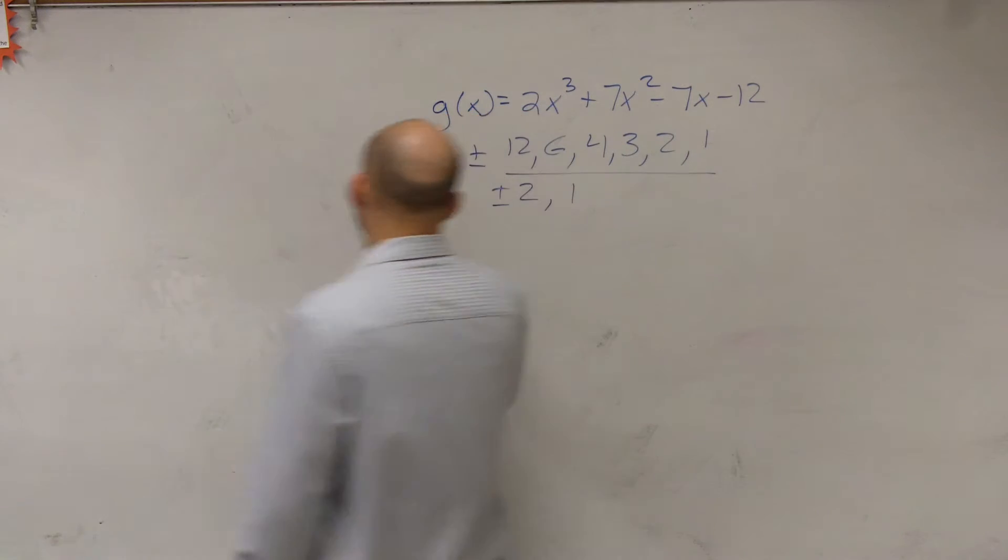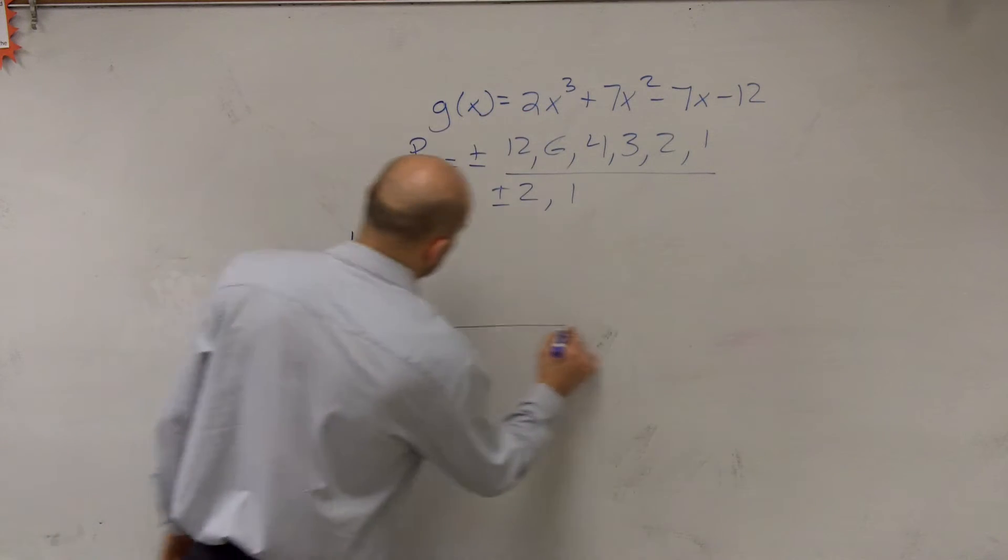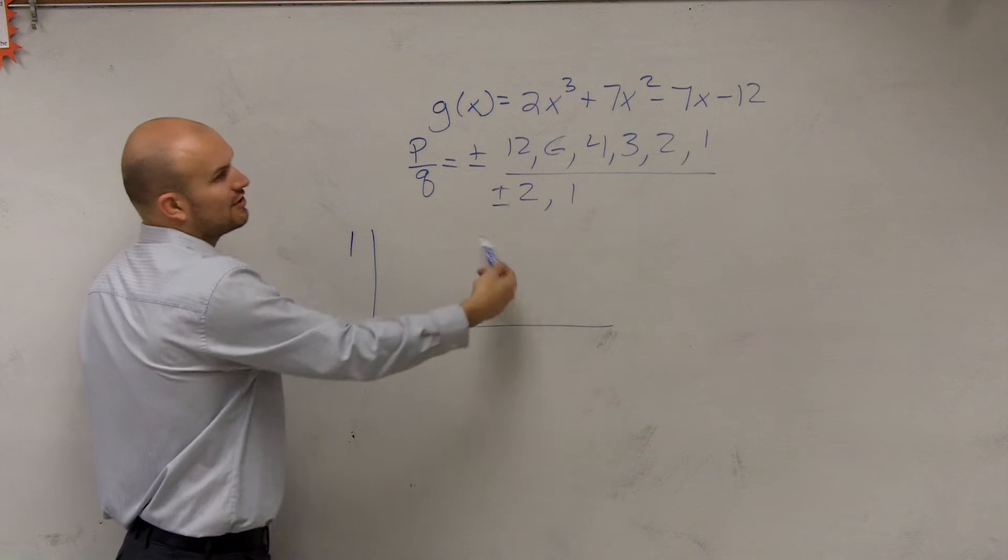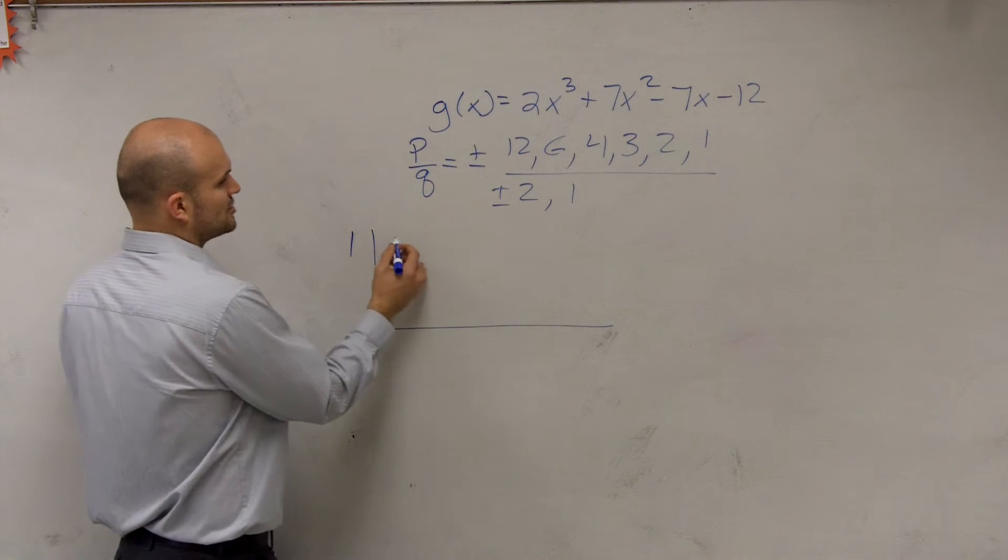So you always want to start at at least 1 and see if that's a rational zero. If 1 doesn't work, then try negative 1. So let's do 1, because I know that's at least a rational zero. There's a lot of other rational zeros that if we need to, we'll try them. So let's do 1.